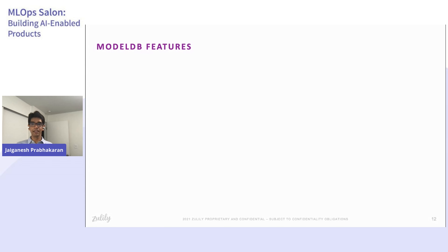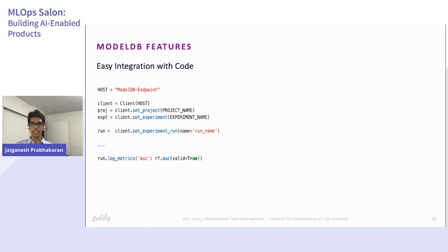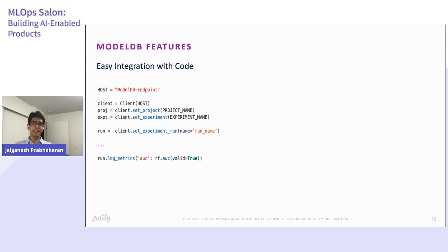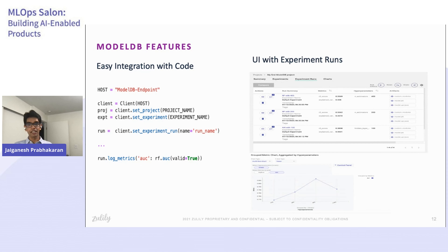Here are some of the features of ModelDB that I'll quickly go through. As you can see, it's very easy to use the Python client to create an experiment run — all you need is really those four lines of code. To log model hyperparameters or upload artifacts is very similar, where you're just logging a metric. The Python client also has functionality that allows you to upload a dictionary to support multiple uploads with a single function call. And here are a couple of screenshots in the UI showing experiment runs as well as charts comparing different metrics across multiple experiment runs.